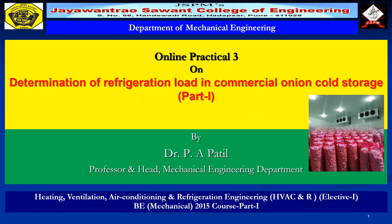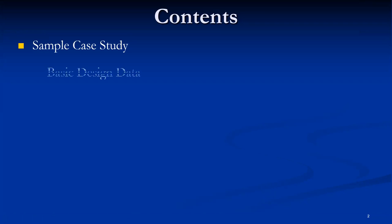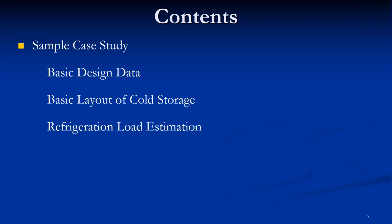Welcome back to online practical 3 on determination of refrigeration load in commercial onion cold storage. This is a case study type experiment mainly divided into two parts. This session will discuss part 1 of the experiment. Based on the basic design data, the layout of the cold storage will be developed, refrigeration load estimation will be done, followed by conclusion.